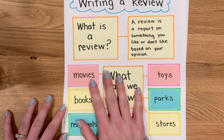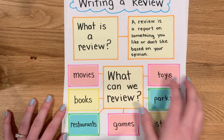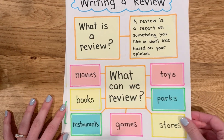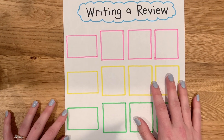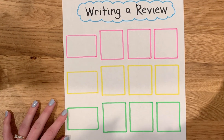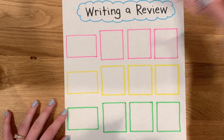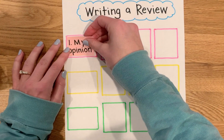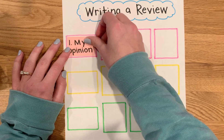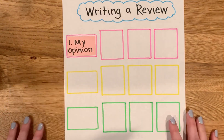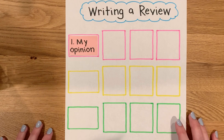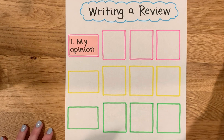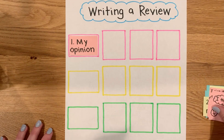Today we're going to start thinking about how we write our review. The first thing you need to do when you are writing a review is think about what your opinion is. You've already talked about opinions being something that you believe. So the first thing we do is think about our opinion on that topic, and after we pick our topic, we need to tell our readers what we think about it.